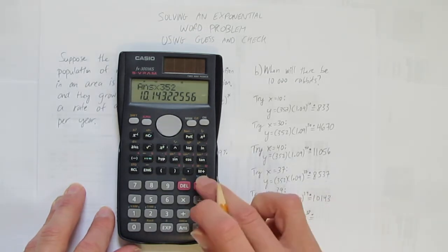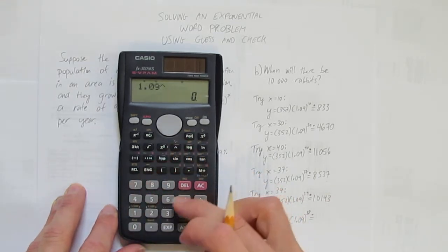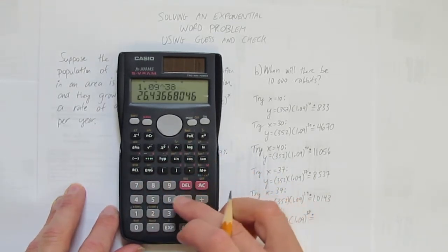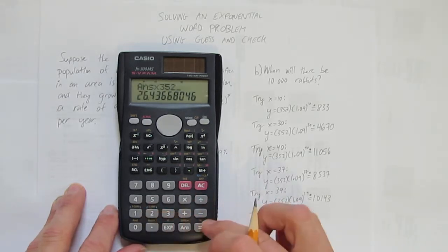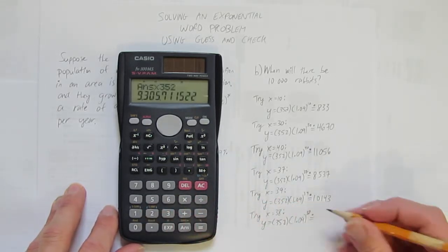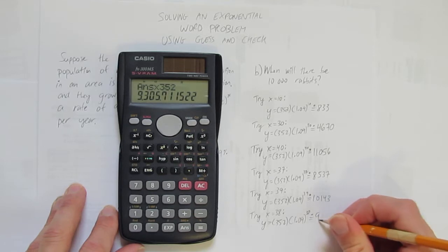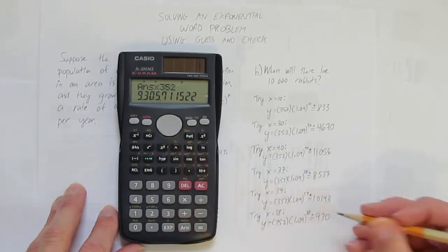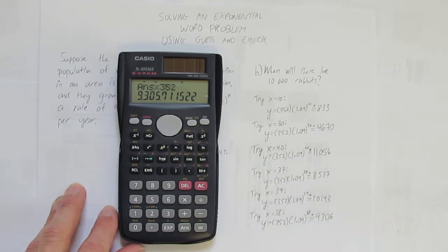Y equals 352 times 1.09 to the power of 38. Put a rounding dot. I always do the exponent stuff first. Some calculators you don't have to, but why chance it? Do the order of operations. Ah, finally a round up. 9,305.7. So round to the nearest rabbit is 9,306.